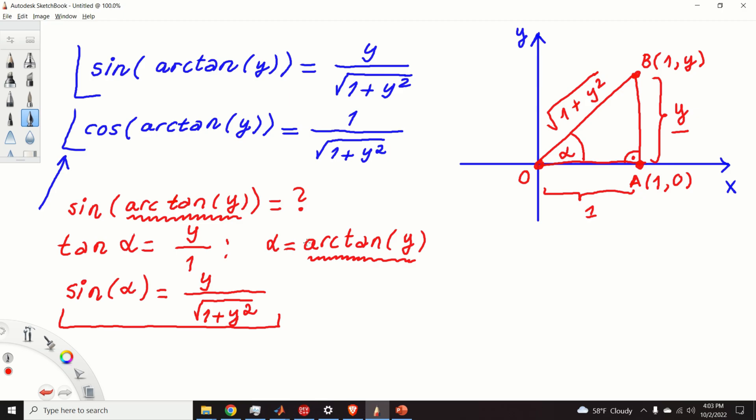that alpha is equal to arctan(y). So, we can write that sin of arctan(y) equals alpha. And here is our sin(alpha), which is equal to y over the square root of 1 plus y squared. And this is the proof.